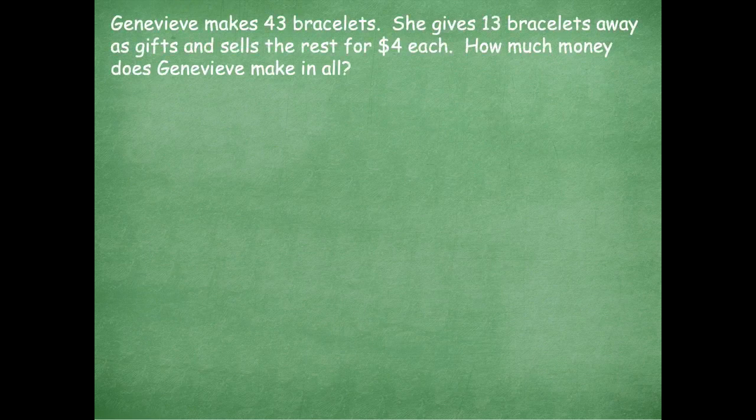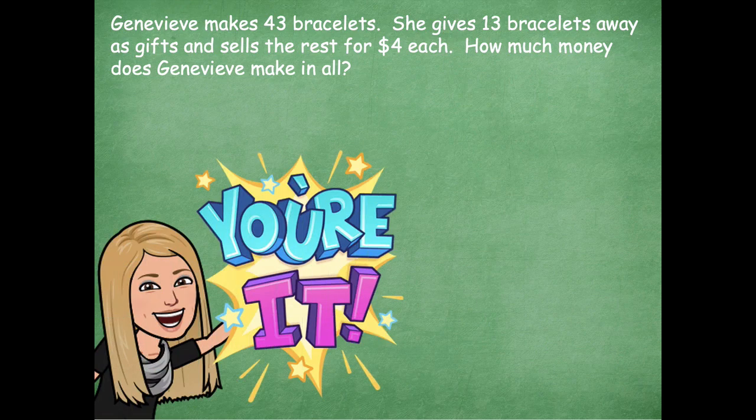Let's take a look at another one. Genevieve makes 43 bracelets. She gives 13 bracelets away as gifts and sells the rest for $4 each. How much money does Genevieve make in all? Again, you're doing two steps: she made some and then she sold some, and we want to find out how much money she makes with the rest of the bracelets. Go ahead and pause the video, use the RDW process to solve, and then click play when you're ready to go over it together.